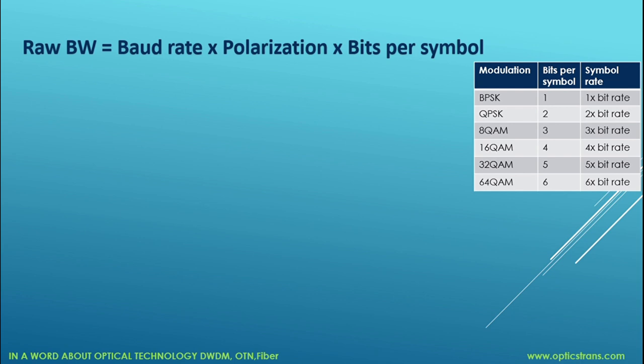Now we can calculate the bandwidth. To calculate bandwidth, we use the formula: bit rate divided by polarization times bit per symbol equals baud rate. We're using QPSK modulation, which has 2 bits per symbol. If we're using single polarization, we count that as 1. So the total output raw bandwidth will be 28 gigabaud.